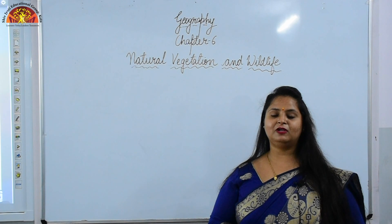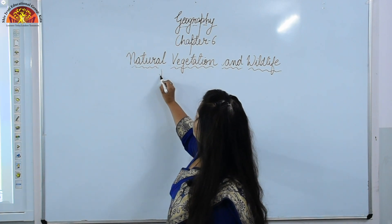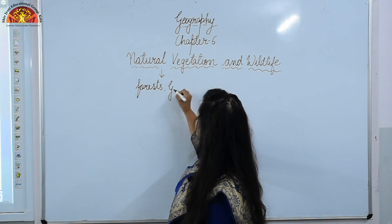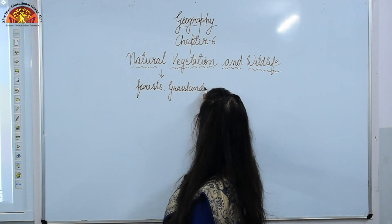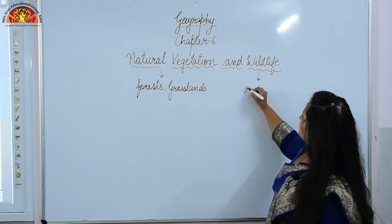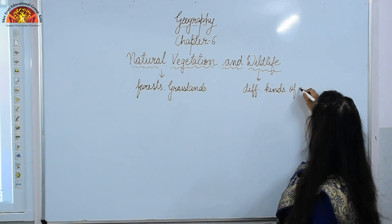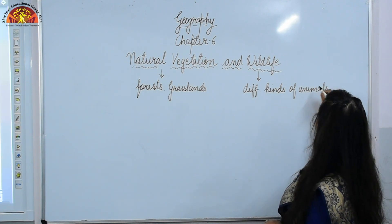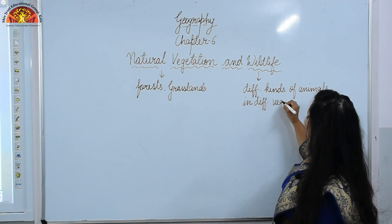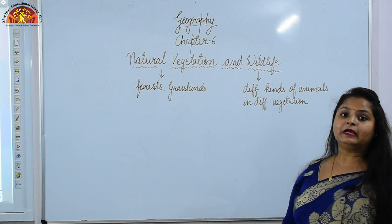What do you understand by Natural Vegetation and Wildlife? If we talk about Natural Vegetation, it includes forests, grasslands, and different kinds of vegetation. And if we talk about wildlife, it includes different kinds of animals found in different vegetation, forests, and grasslands.